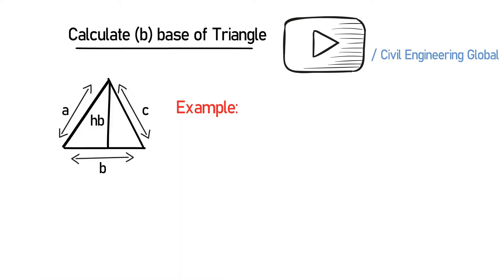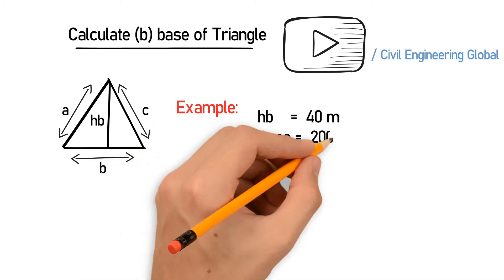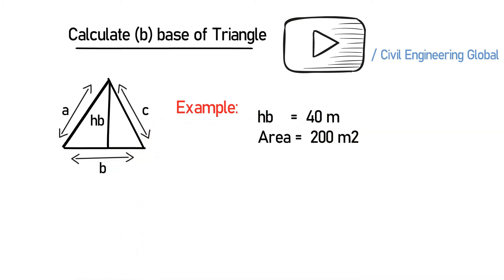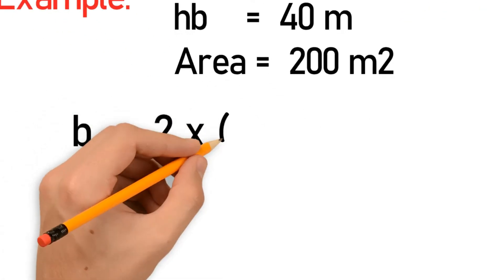HB is equal to 40 meter and area is equal to 200 meter square. To find the base B we will use the following formula.